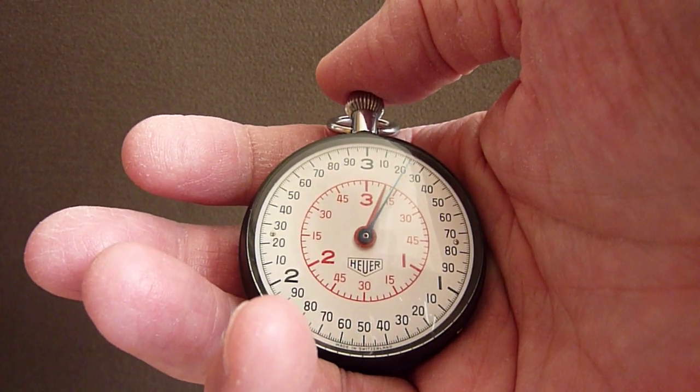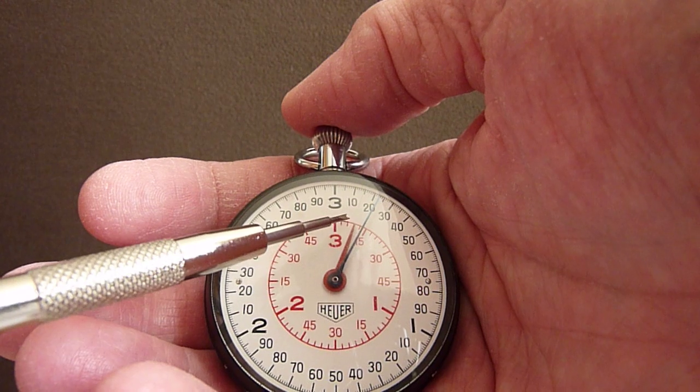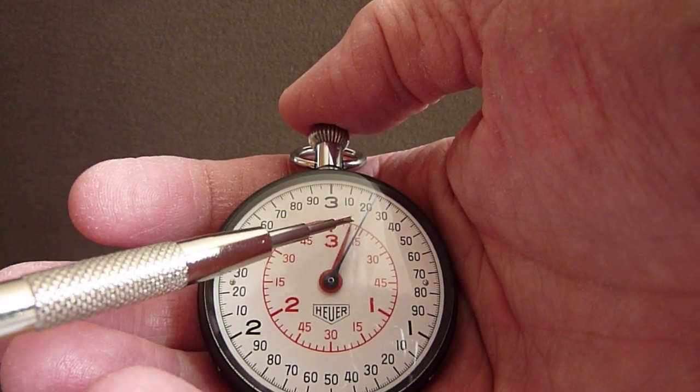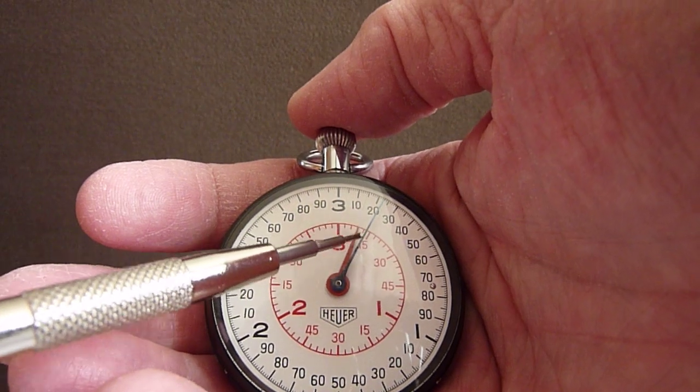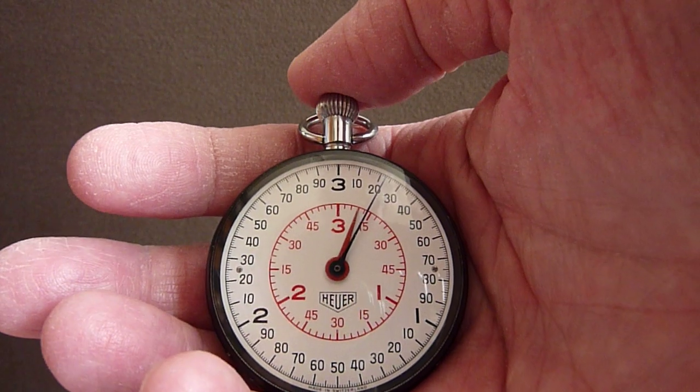In this case, you can see in the red inner register each little increment is three seconds, so it's three, six, nine seconds, plus approximately twenty-three hundredths of a second.